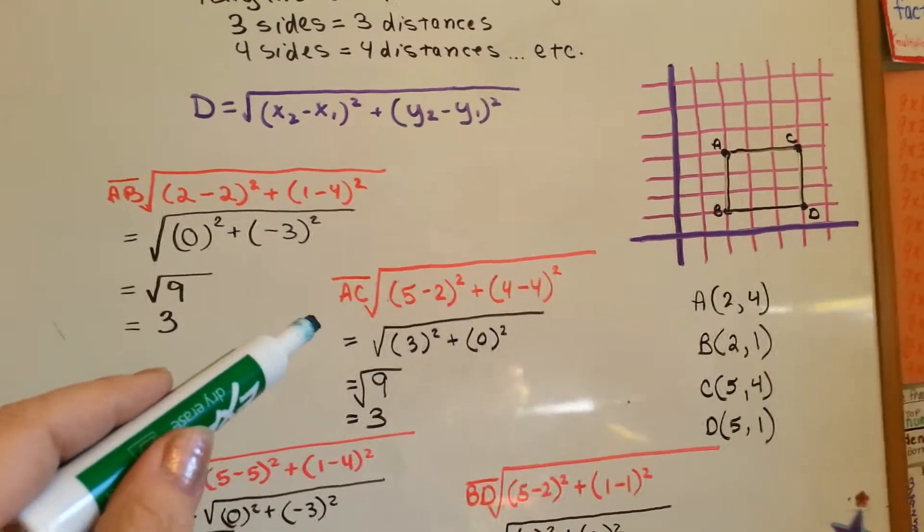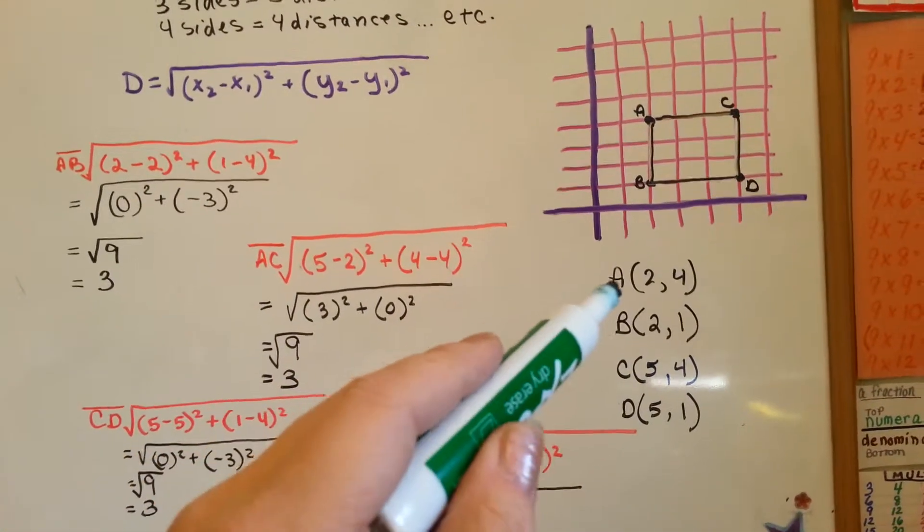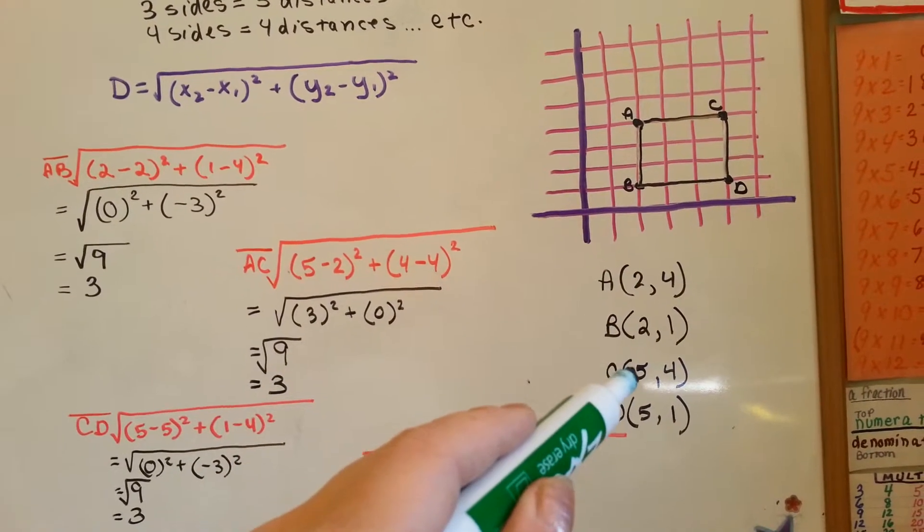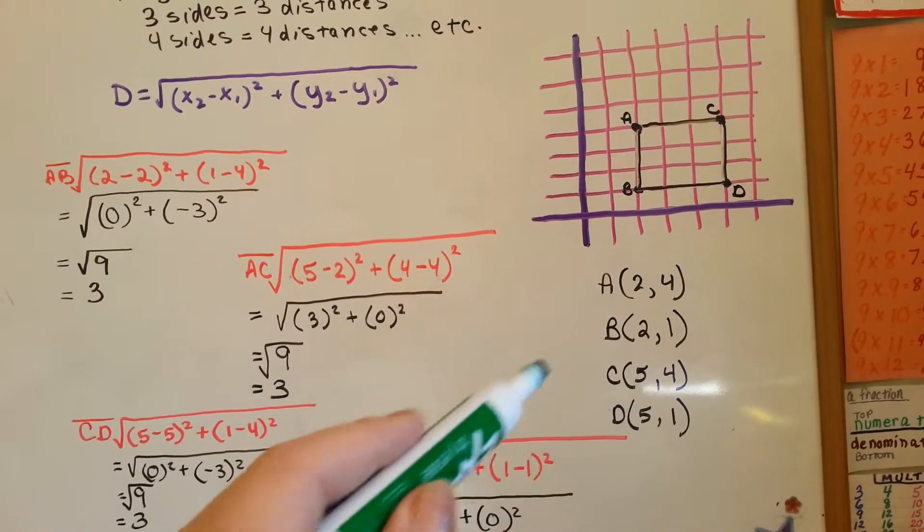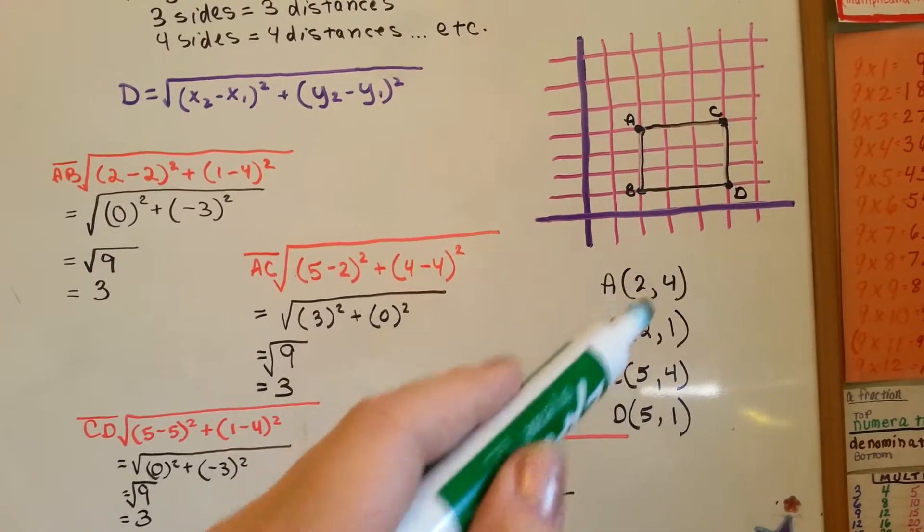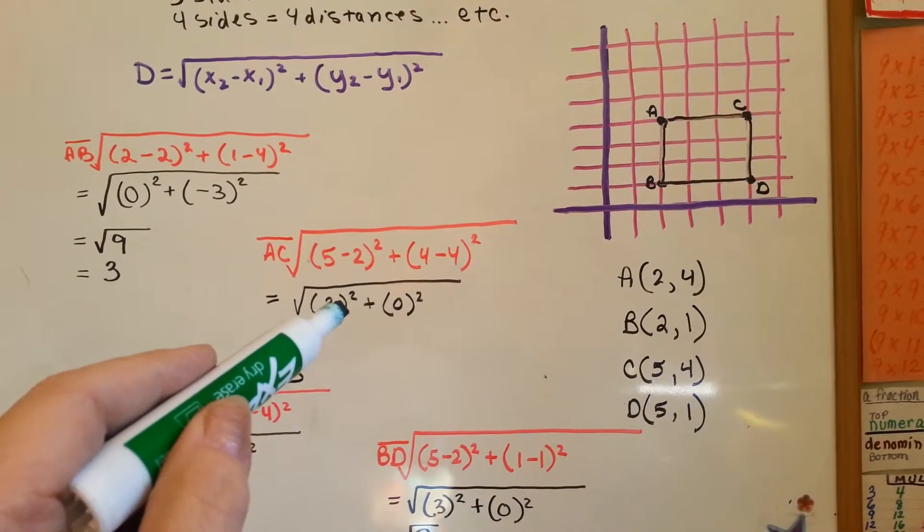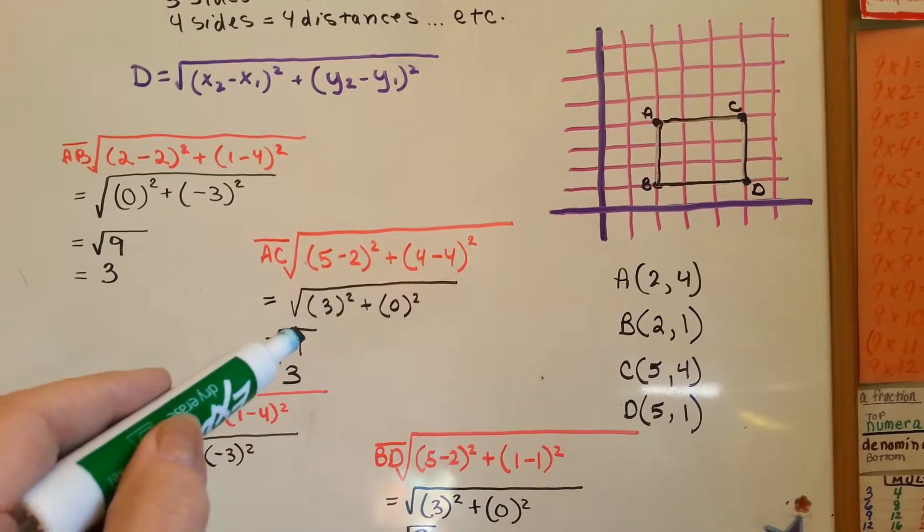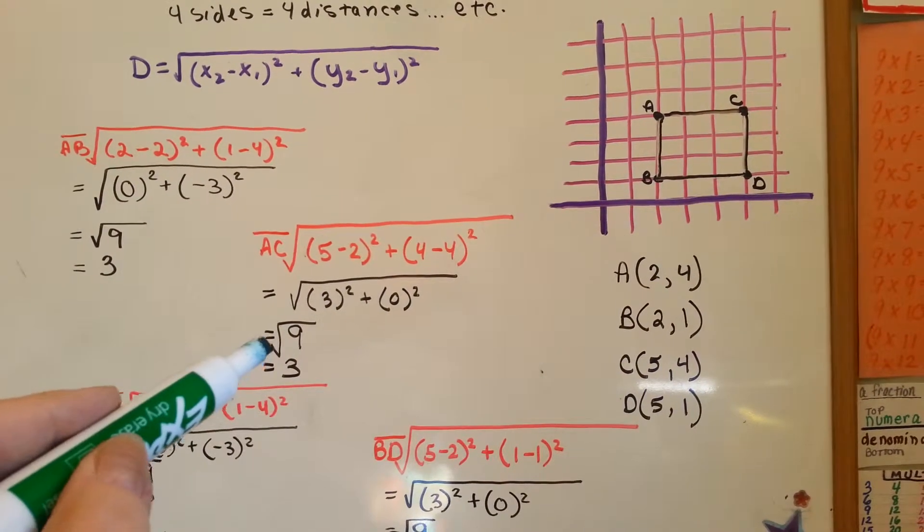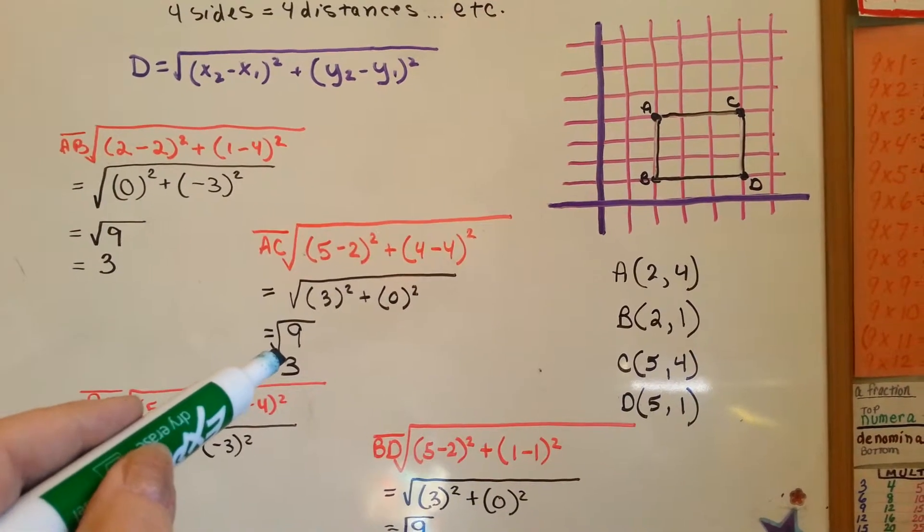Then you do AC and you plug in. Here's x1, here's x2. So, we're going to do 5 take away 2 and then 4 take away 4. 5 take away 2 is 3. It's going to have to be multiplied by itself to get 9. That's 0. So, the square root of 9 is 3. So, now we have another 3.